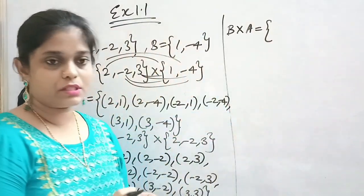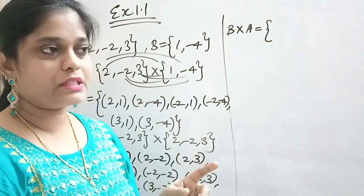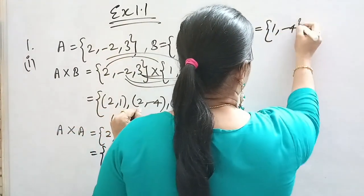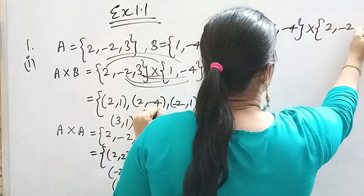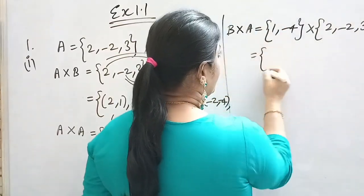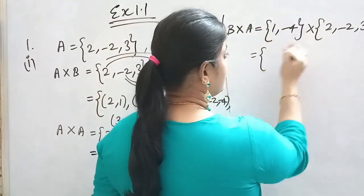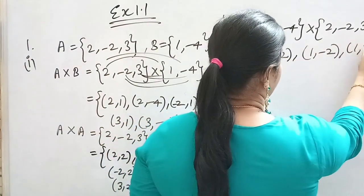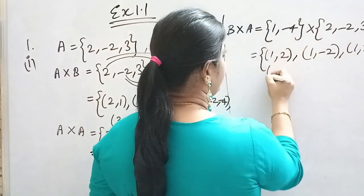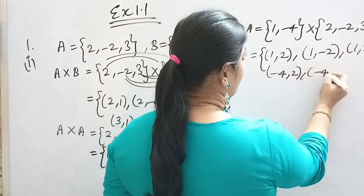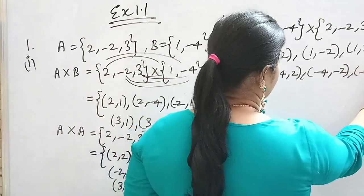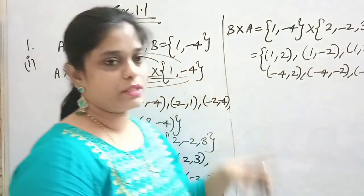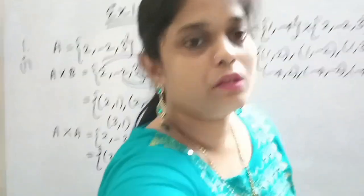For A cross A: the ordered pairs are (2,2), (2,-2), (2,3), (-2,2), (-2,-2), (-2,3), (3,2), (3,-2), (3,3). In the same way for B cross A, B set is first and A set is next. B set is {1, -4} crossed with A set {2, -2, 3}, giving: (1,2), (1,-2), (1,3), (-4,2), (-4,-2), (-4,3).